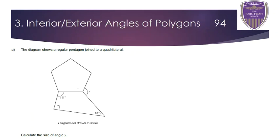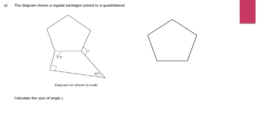Section three is all about interior and exterior angles of polygons. I've got a regular pentagon and a quadrilateral. Because it's regular, all the angles in the pentagon are the same. I'm asked to calculate X, which is around this point, and angles around a point sum to 360 degrees. Going back to angles in a polygon — this is a five-sided shape. I can cut it up so it makes three interior triangles; it's got five sides and three triangles.